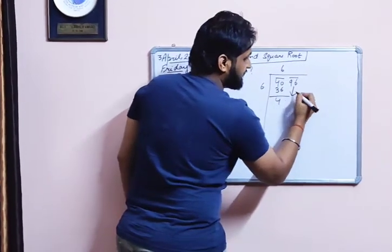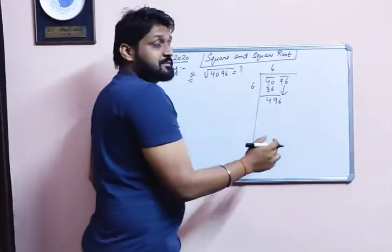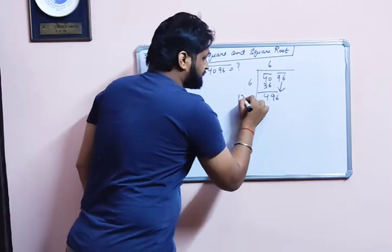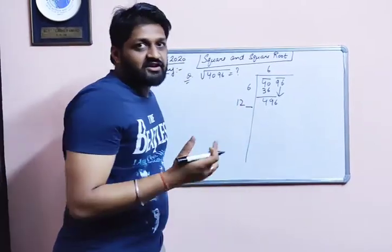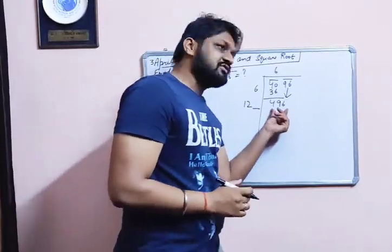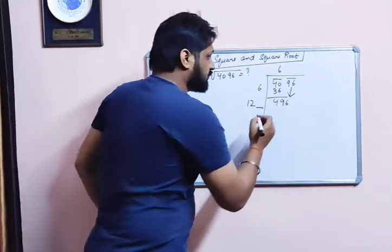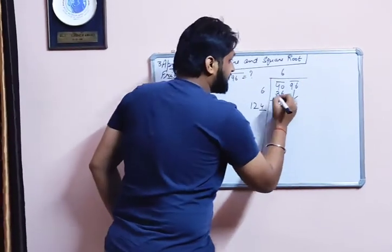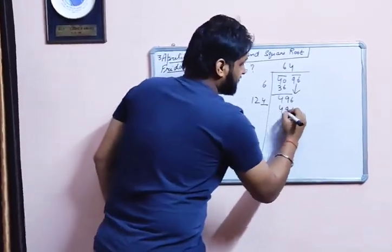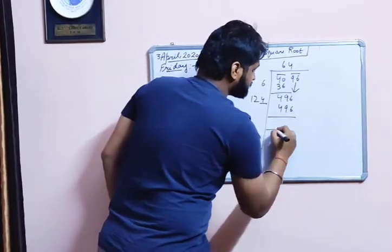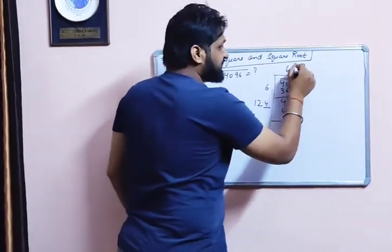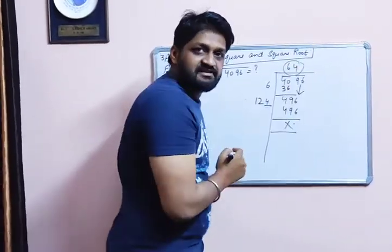This pair comes down as 96, giving us 496. Next step: 6 plus 6 is 12. We have to think of a digit that comes closer to that number. That is 124 multiplied by 4, which gives 496. The remainder comes out to 0, so the answer is 64.